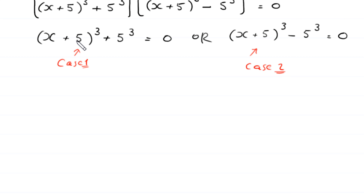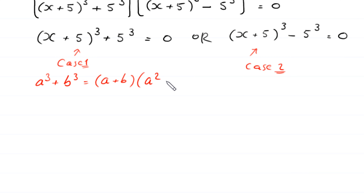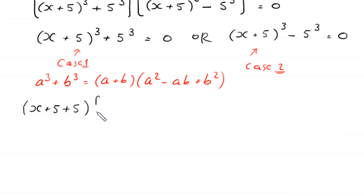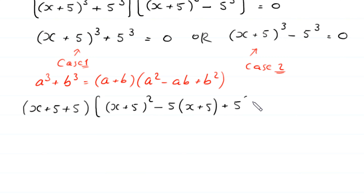First we solve Case 1. By using the algebraic identity a³ + b³ equals (a + b)(a² − ab + b²), the expression (x + 5)^3 + 5^3 becomes (x + 5 + 5) times [(x + 5)² − 5(x + 5) + 25] is equal to 0.